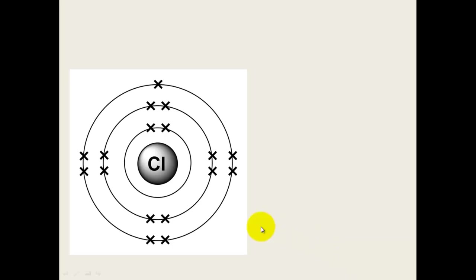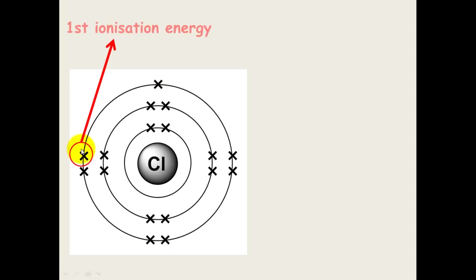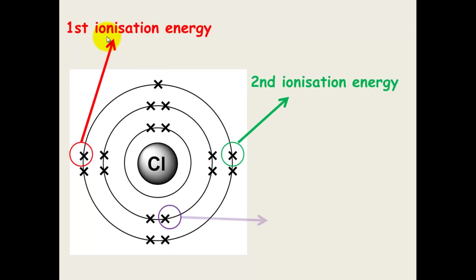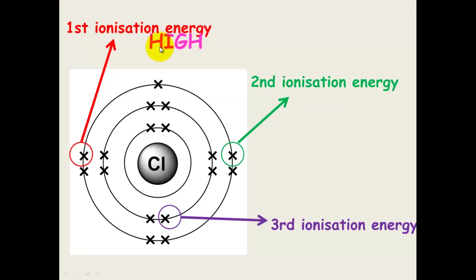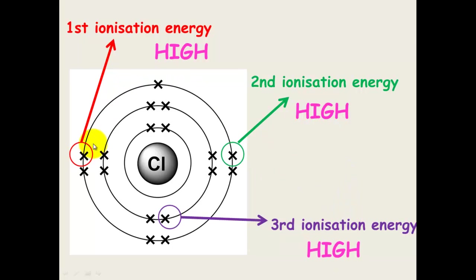Looking at chlorine as a second example: chlorine doesn't want to lose any of its electrons — it wants to gain one. So the first, second, and third ionization energies are all going to be high-energy ionizations. High amounts of energy are needed to remove any of these electrons because chlorine wants to gain an electron, making it much harder to remove them.